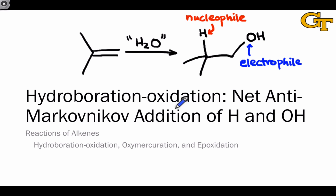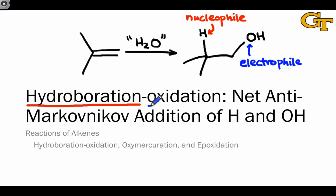The two stages of hydroboration-oxidation are actually designed to achieve these effects. In the hydroboration stage, we supply the alkene with a nucleophilic source of hydrogen. In the oxidation stage, we supply the intermediate following hydroboration with an electrophilic source of oxygen. The net result is anti-Markovnikov hydration—addition of H and OH with opposite site selectivity to that predicted by Markovnikov's rule.